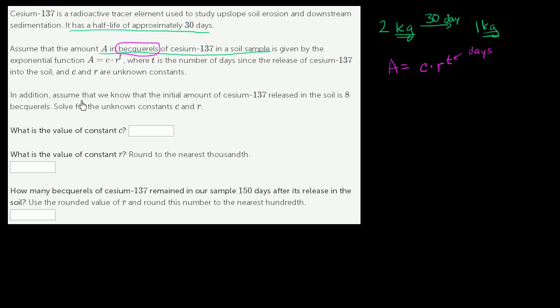In addition, assume that we know that the initial amount of cesium-137 released in the soil is 8 becquerels. Solve for the unknown constants C and R. The initial in the soil, that's when T is equal to 0, when no days have passed. So the amount at time 0, that's going to be equal to C times R to the 0 power, which is just C times 1, which equals C.